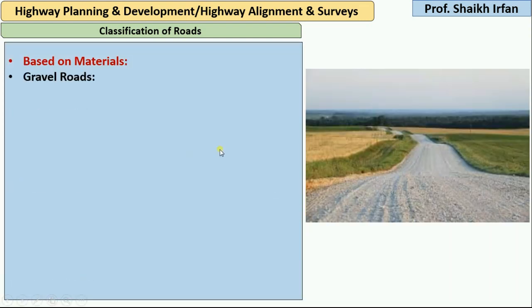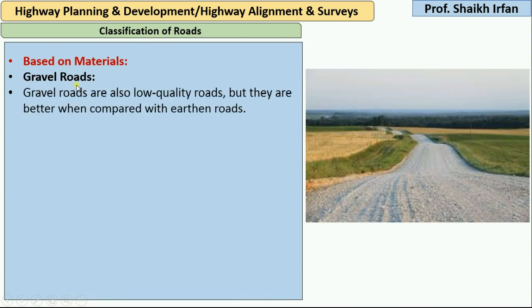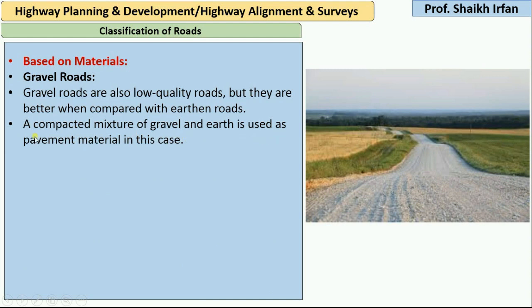Based on the materials, another type is gravel roads. Gravel roads are also a low quality road, but they are better than earthen roads. The material used is gravel, and a compacted mixture of gravel and earth is used as a pavement material. So gravel roads use gravel material mixed with soil to make the road surface.